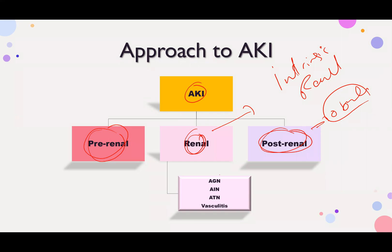If you have disease in the glomerulus, we call it acute glomerulonephritis. Disease in the interstitium: acute interstitial nephritis. Problems in the tubules: acute tubular necrosis. Something with the blood vessels: vasculitis. So it depends on what structure inside the kidney is affected.